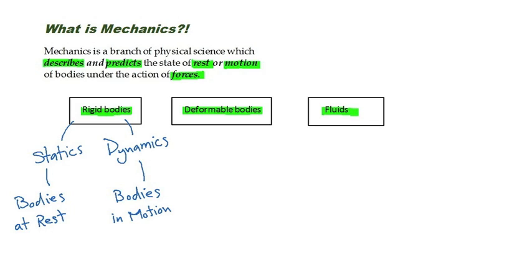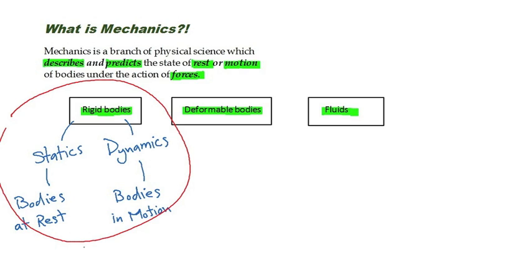In rigid bodies mechanics, bodies are assumed to be perfectly rigid. So everything is assumed to be perfectly rigid. In reality, structures are never absolutely rigid, and deform under the loads.